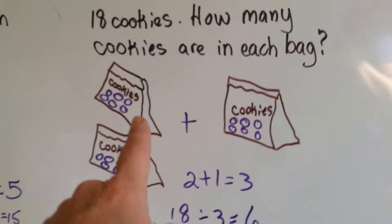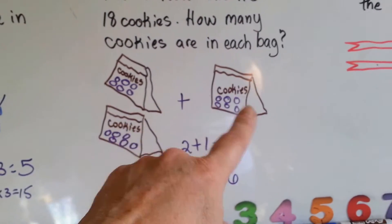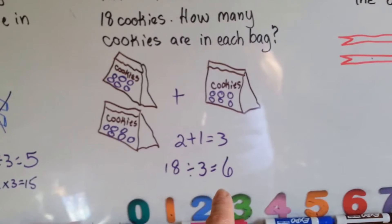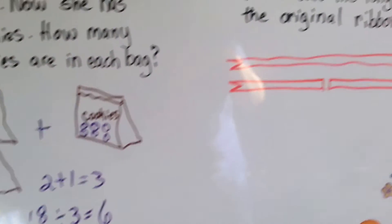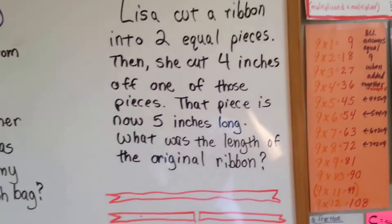So, what we had to do is first we had to add the number of bags together. And then we had to divide to find out that there's 6 cookies in each bag. Alright. This one's a little trickier, so pay attention.